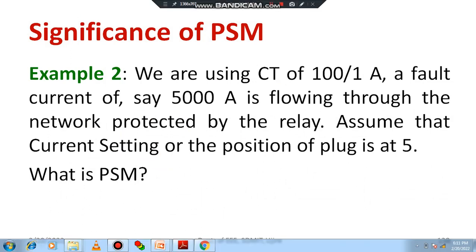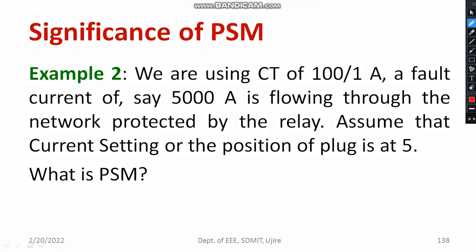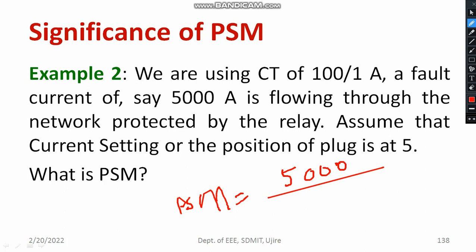Can you work out this second problem? PSM is nothing but fault current divided by (PS × CT ratio). Fault current is 5000, PS is 5, and CT ratio is 100 by 1, which is simply 100. So PSM equals 5000 divided by (5 × 100), which gives PSM equal to 10.